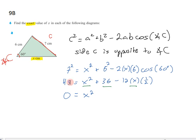And then 36 take 49 leaves negative 13, and 12 times a half is 6. So we get x squared, negative 6x, and negative 13 from 36 take 49. And there's our quadratic that we'll have to solve.